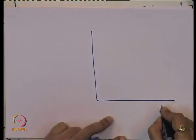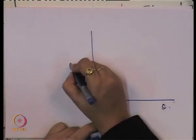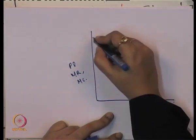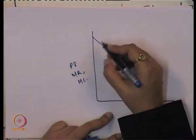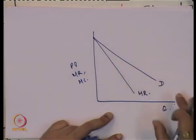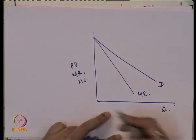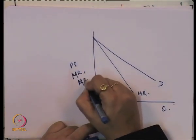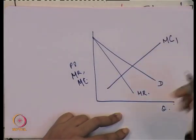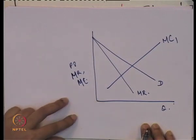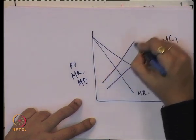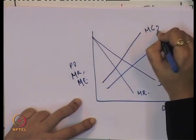Here we take quantity on the x-axis and price, marginal revenue, and marginal cost on the y-axis. This is our demand curve, this is the marginal revenue curve. We assume that the marginal cost curve has an upward slope — this is marginal cost curve MC1. There is an imposition of tax, and that increases the marginal cost curve from MC1 to MC2.